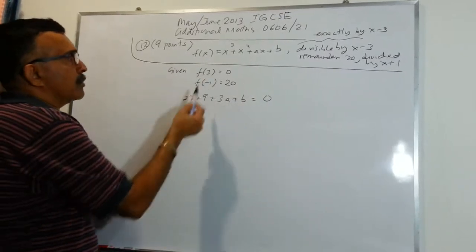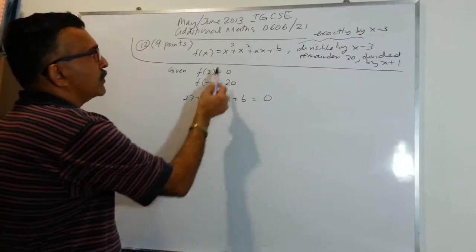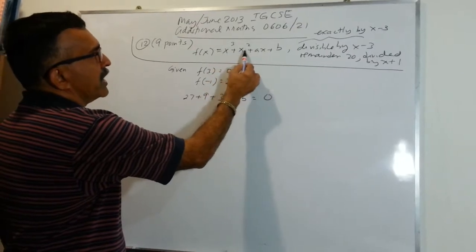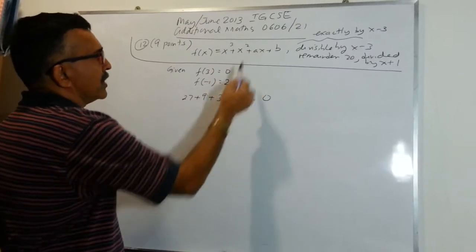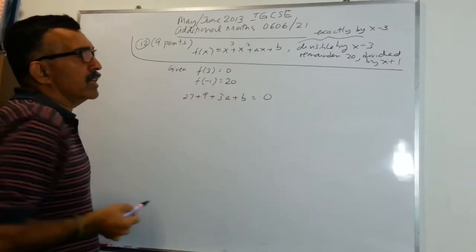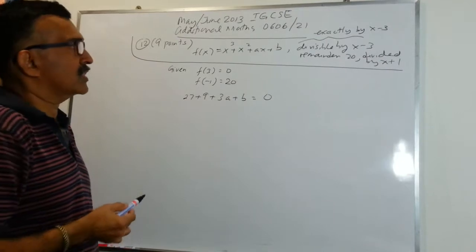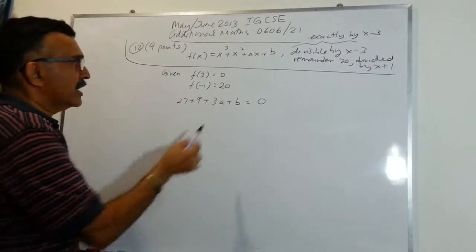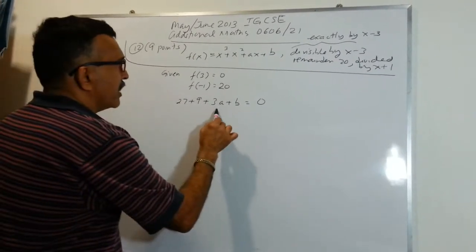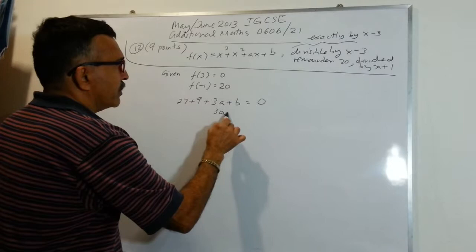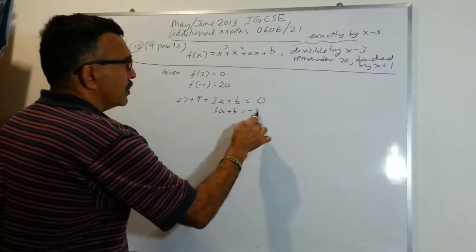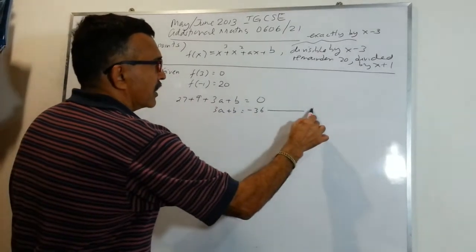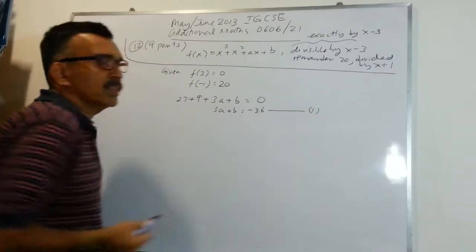Plugging in the value of 3 into the function: 27 + 9 + 3a + b = 0, since the remainder is 0 because it is exactly divisible by x minus 3. So we can write 3a + b = −36 as equation 1.